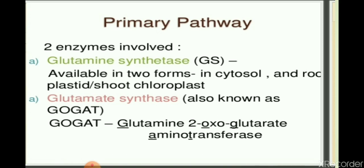In the leaf, the majority of glutamine synthetase is present in the chloroplast. The second important enzyme is glutamate synthetase, also known as GOGAT.